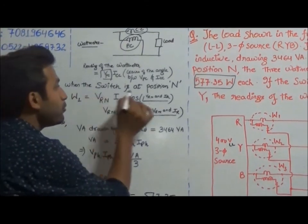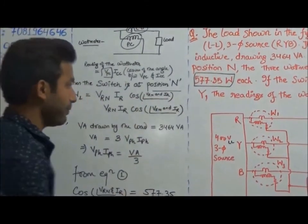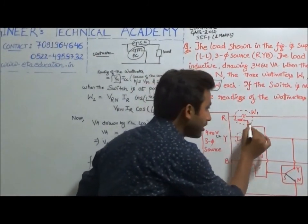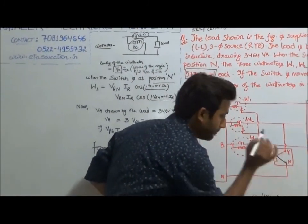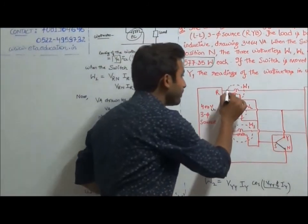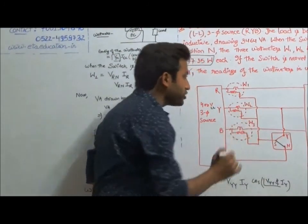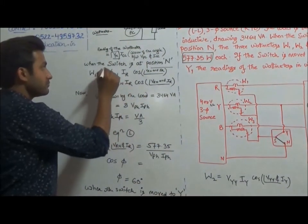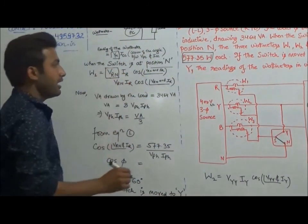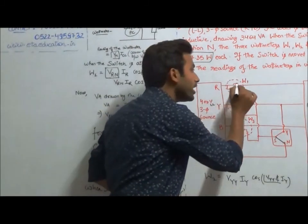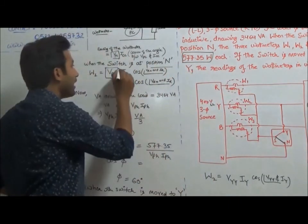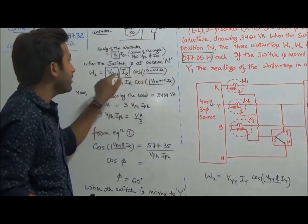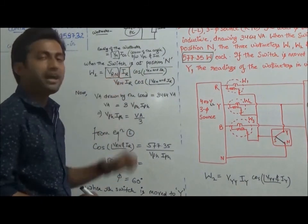When the switch is at position N, the potential coil is connected from R to N. So the voltage across this potential coil is VRN. The current flowing through the current coil is IR, and we need the cosine of the angle between these two quantities, VRN and IR.